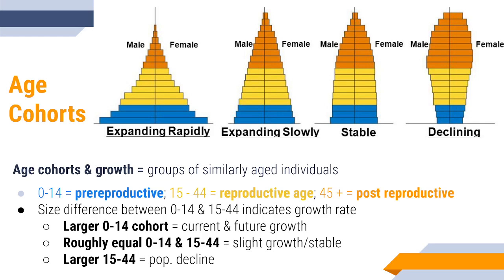Our four examples shown at the top can be basically broken down into growing or expanding rapidly, growing slowly, a stable population in which there's very little to no growth in the population size, or a declining population.